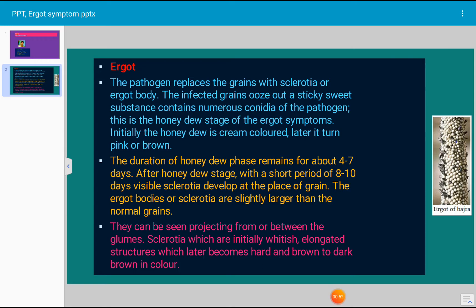Initially, the honeydew is cream colored, and later it turns pink or brown in color. The duration of the honeydew phase remains for about four to seven days.